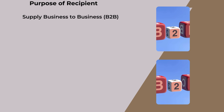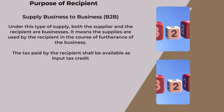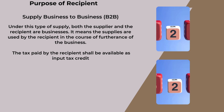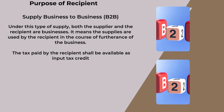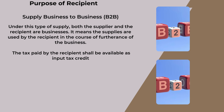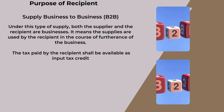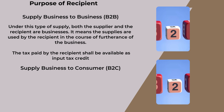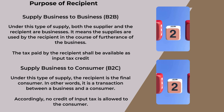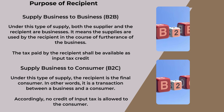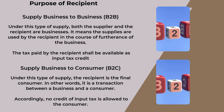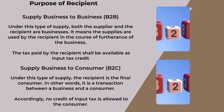On the basis of the purpose of recipient, supply is classified as Business to Business (B2B), where both the supplier and the recipient are businesses, and Business to Consumer (B2C), which is a transaction between a business and a consumer. Accordingly, no credit of input tax is allowed to the consumer.